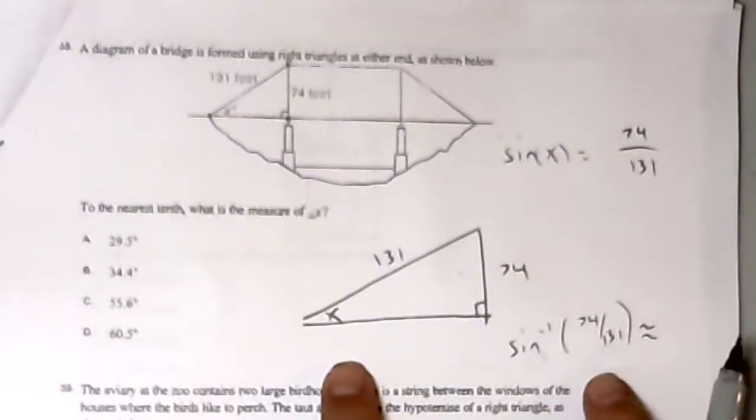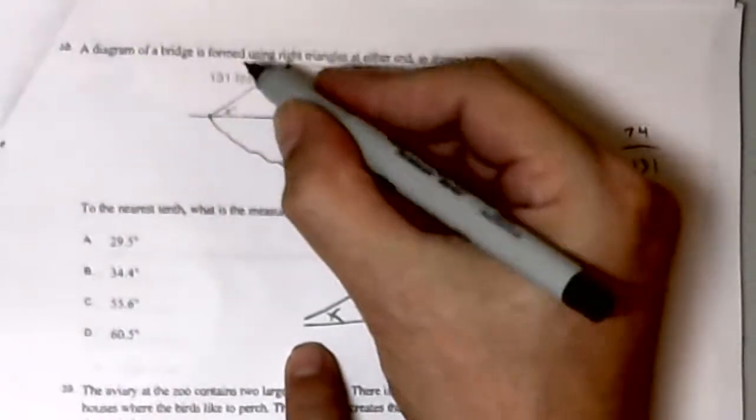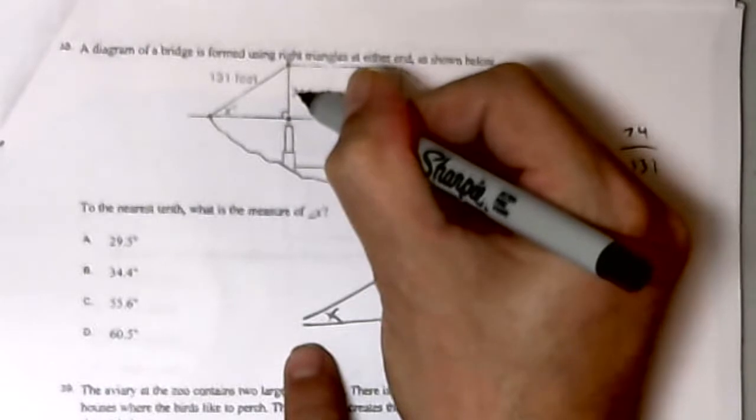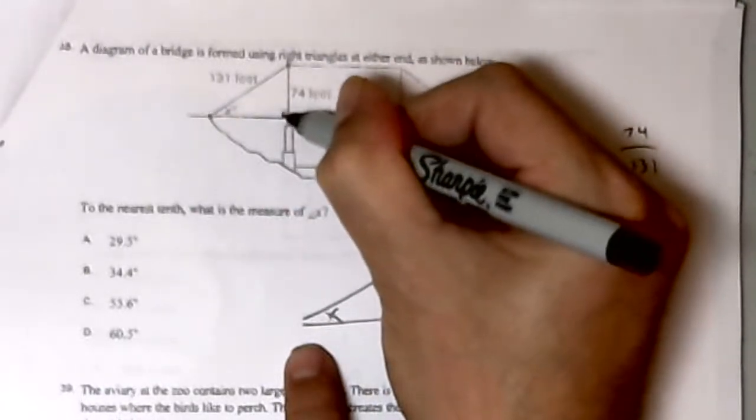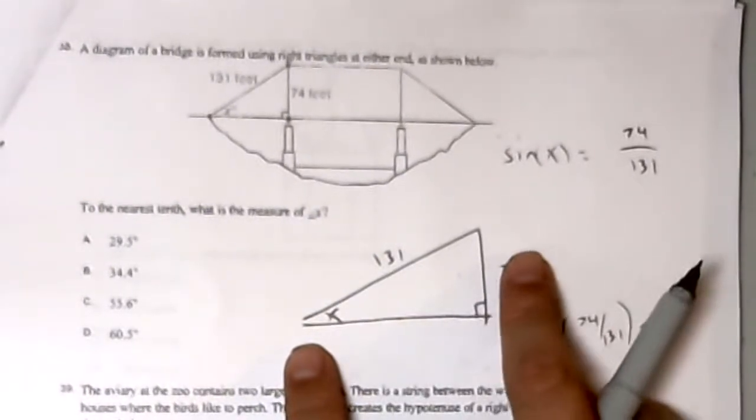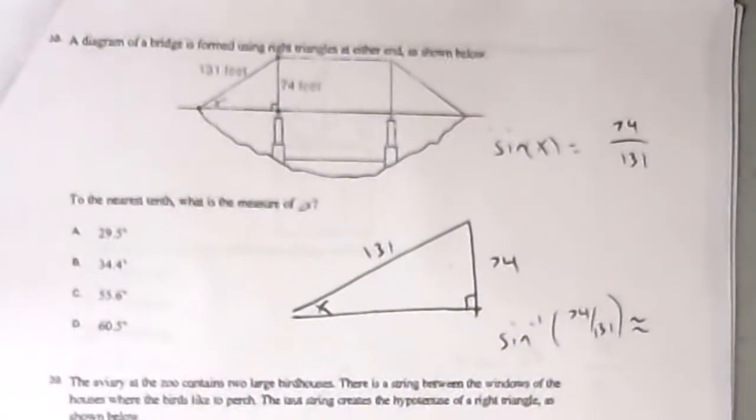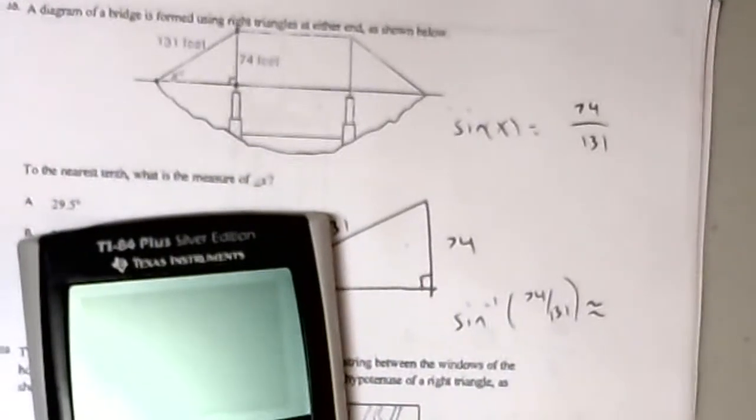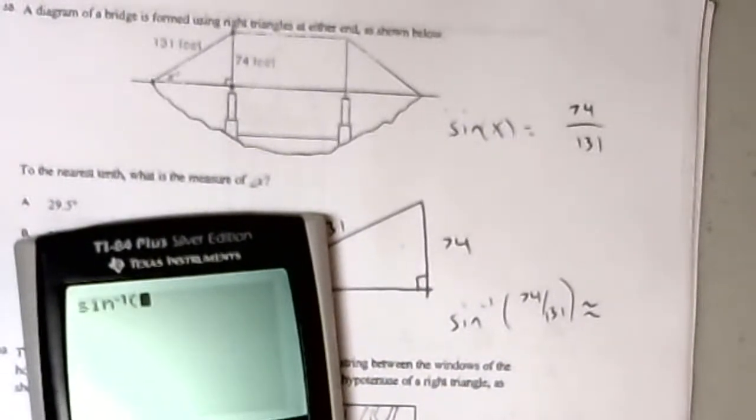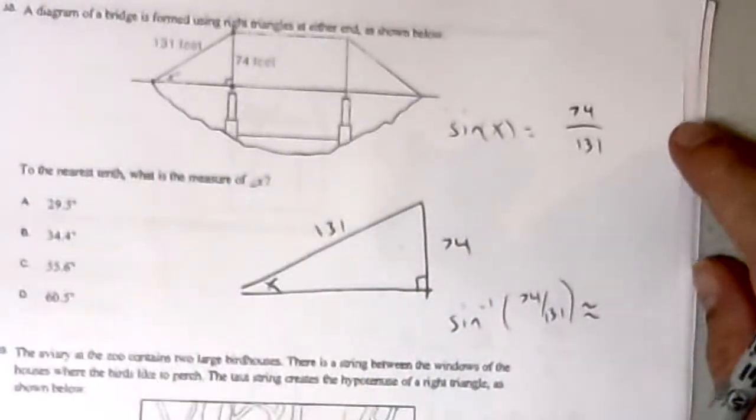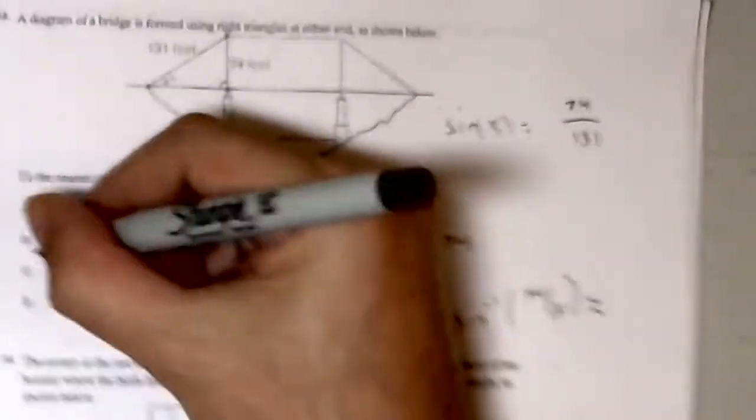We want to know X. I've redrawn the triangle. If I split the angle with the angle bisector, I'll hit the opposite side. That's the opposite. The hypotenuse is always opposite the right angle. So the sine of X equals 74 over 131. I'm going to use your calculator. It'll probably be second sine or shift sine. 74 divided by 131, and I get 34.39, which is 34.4.